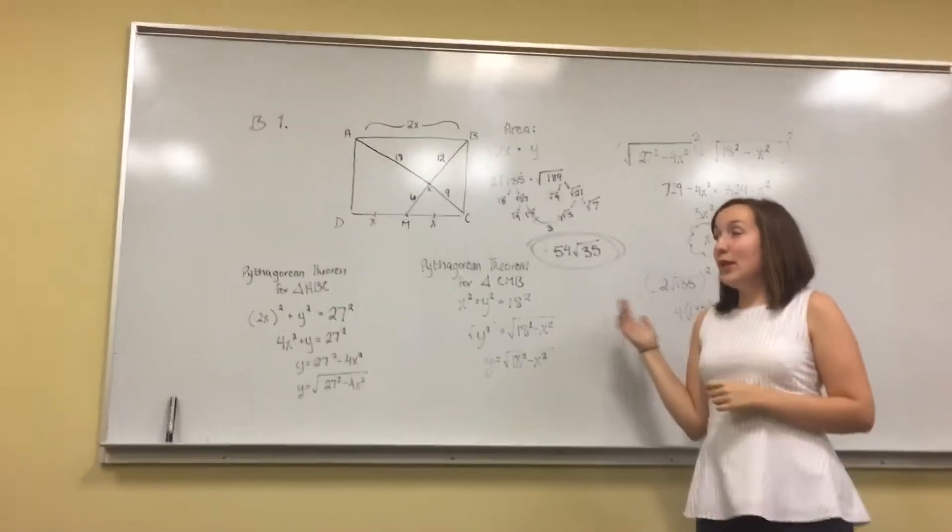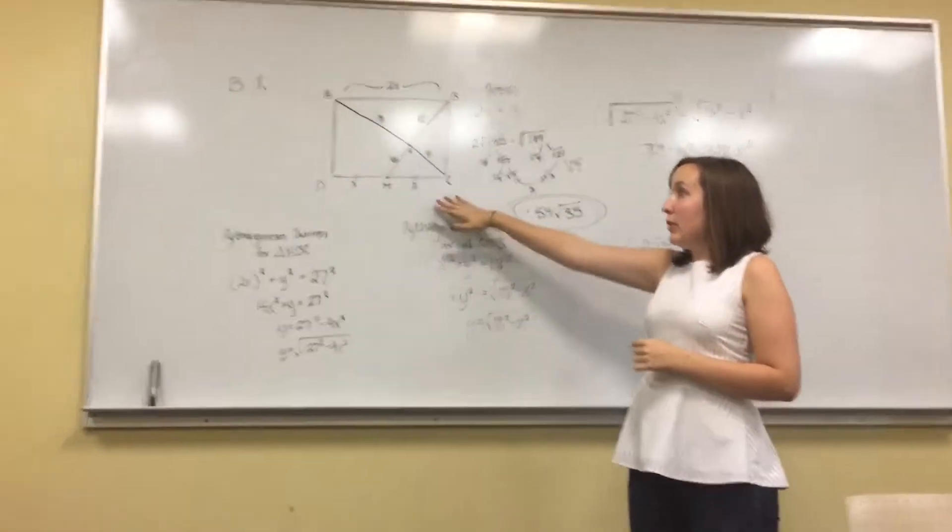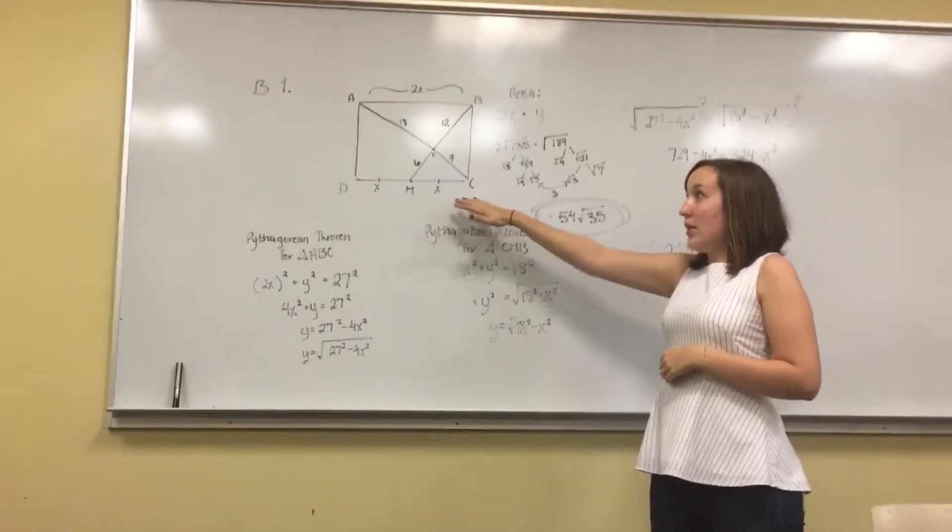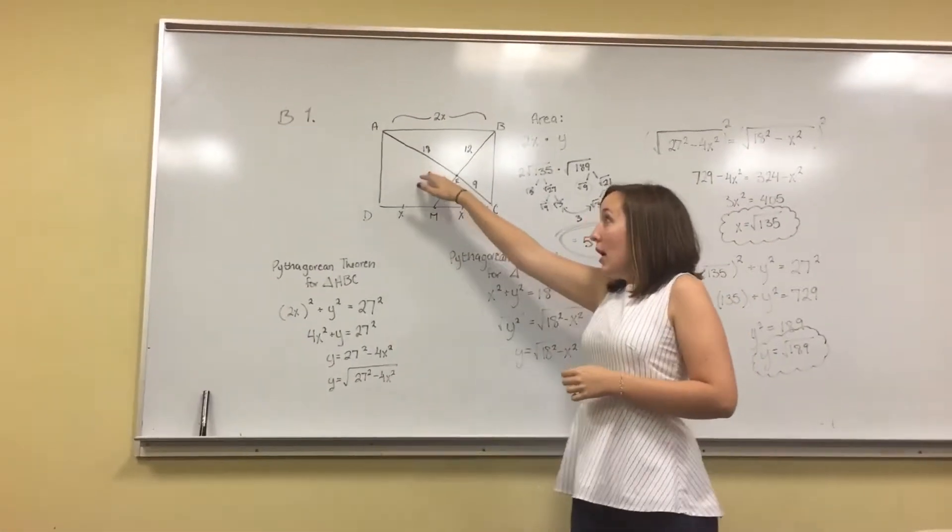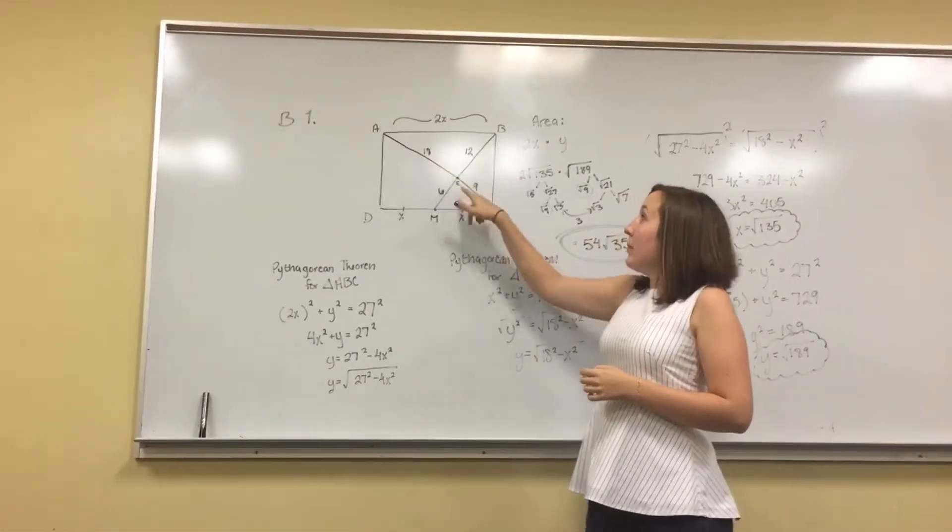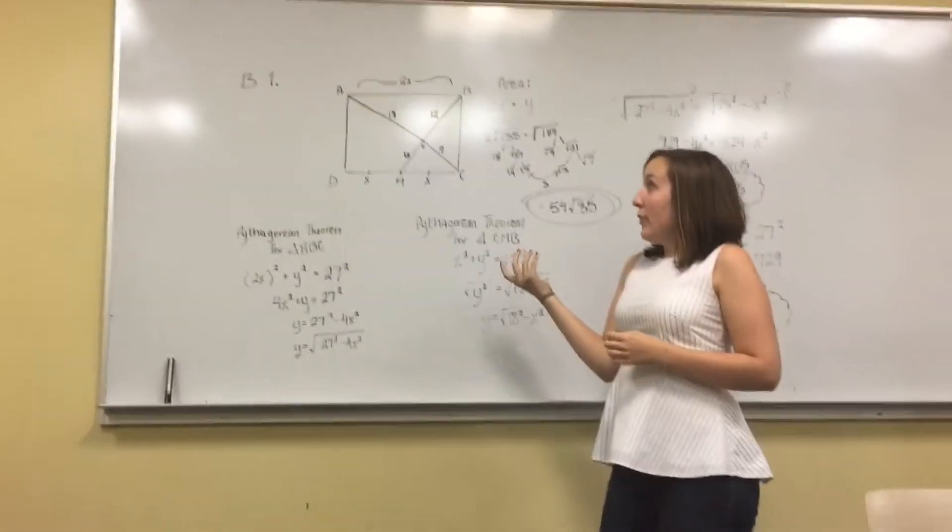Okay, so I was part of group B and I have problem number one. They give us this rectangle with a couple lines drawn through it and they give us some values. My lines were from A to E, it's 18, and then from E to B I got 12. So as I looked at it, I realized that some of the angles in there are going to be the same, so we have some congruent triangles.